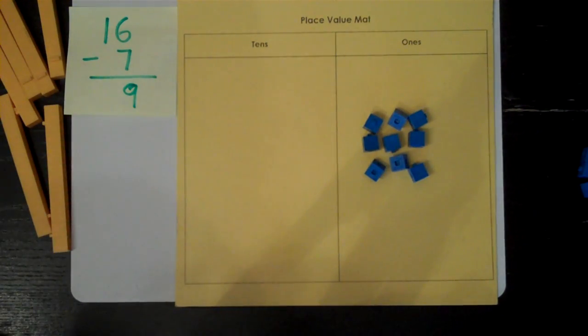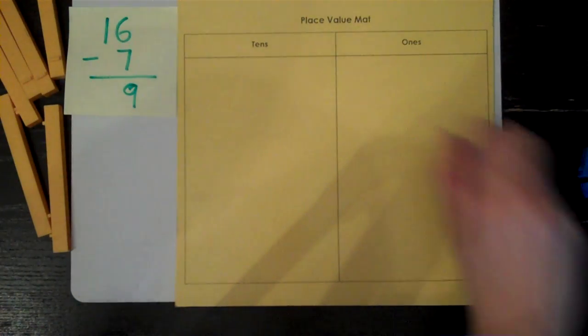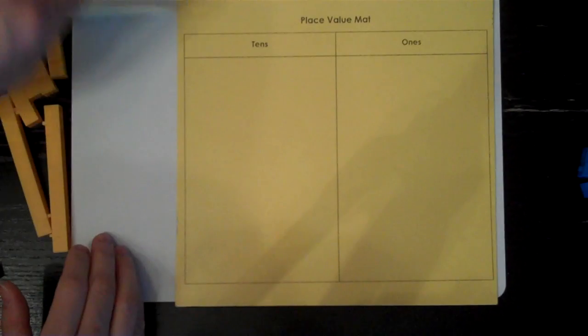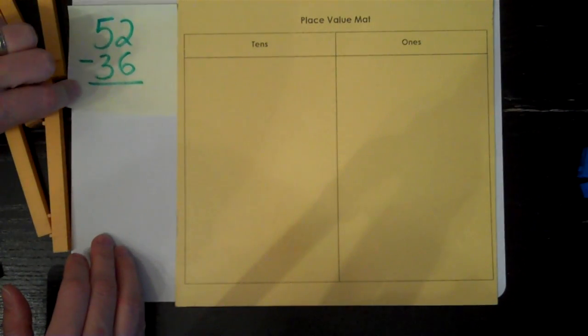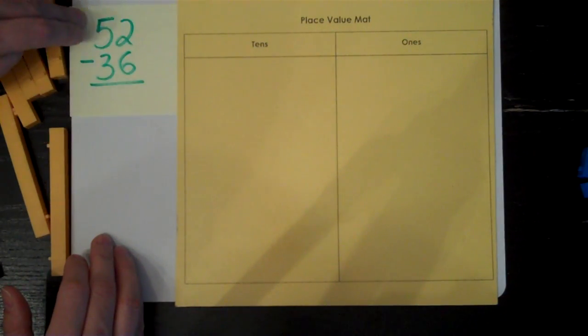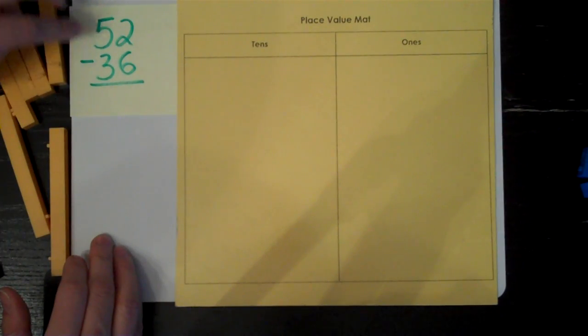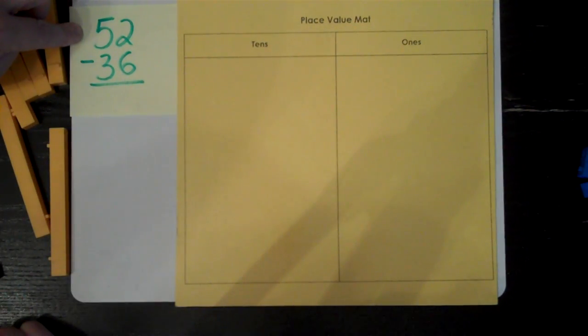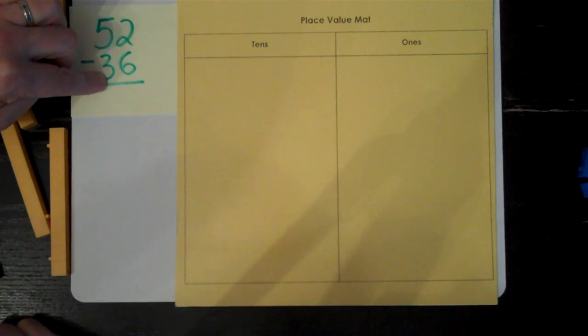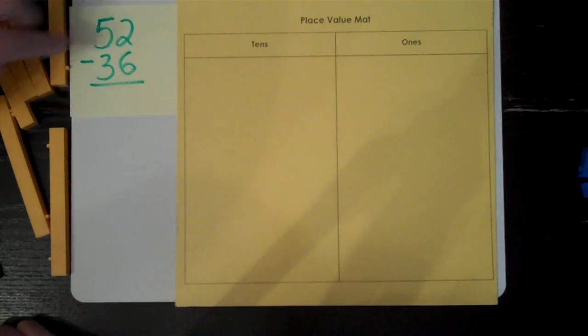That wasn't so hard. Let's try a trickier one. Fifty-two take away thirty-six. In subtraction, we always need to make that first number. So I'm going to make fifty-two.